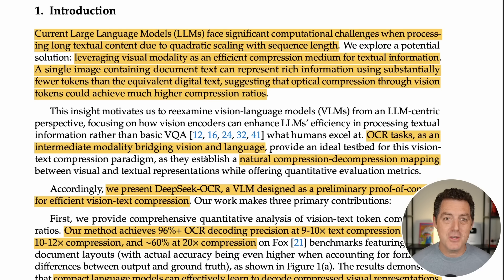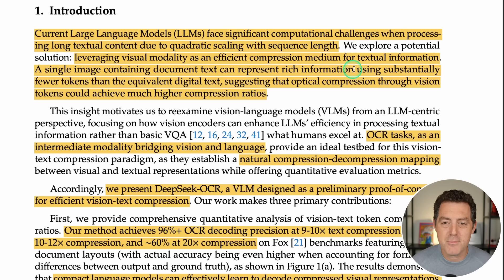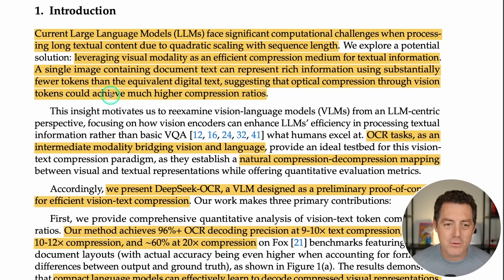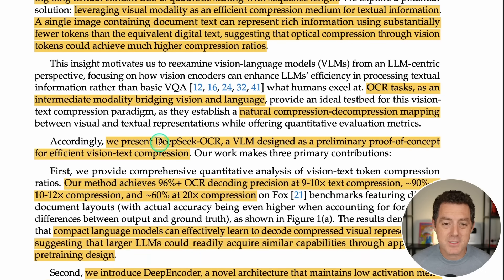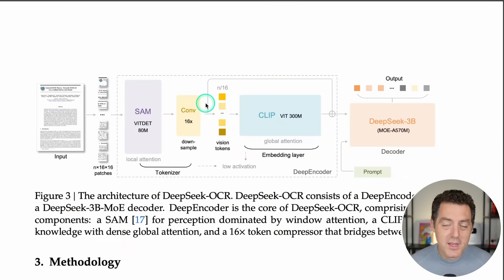What they figured out is that with an image, you can represent 10 times as much text as it takes to represent the image on a per-token basis. A single image containing document text can represent rich information using substantially fewer tokens than the equivalent digital text, suggesting that optical compression through vision tokens could achieve much higher compression ratios. And so they present DeepSeek OCR — a VLM, vision language model — designed as a preliminary proof of concept for efficient vision-text compression.